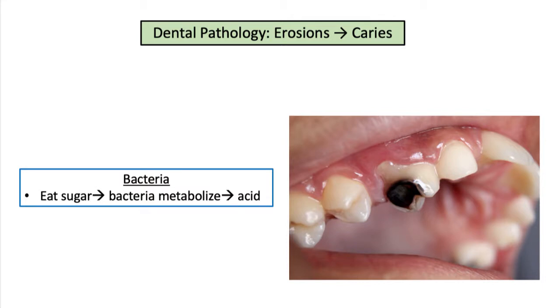Bacteria in the mouth produce acid as they metabolize sugar. This acid can also cause dental erosion if excessive amounts of sugar are eaten or a patient does not have proper oral hygiene. In this case, the erosion is more focal and leads to tooth caries.